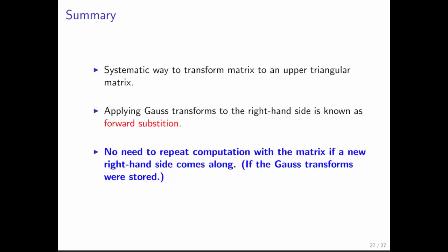Notice that if later on, with the same matrix, a new right-hand side comes along, you don't have to actually go and perform Gaussian elimination, this reduction to an upper triangular matrix, with that matrix. All you need to do is store the Gauss transforms so that you can do forward substitution with the new right-hand side.